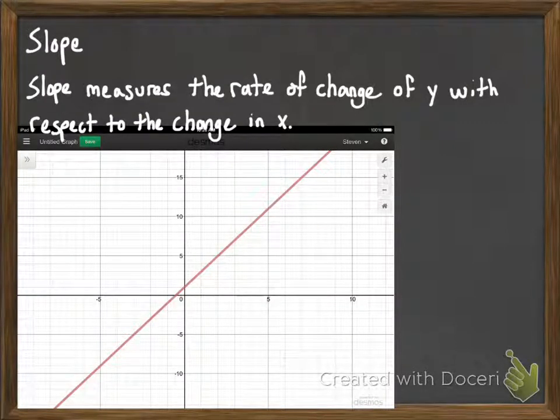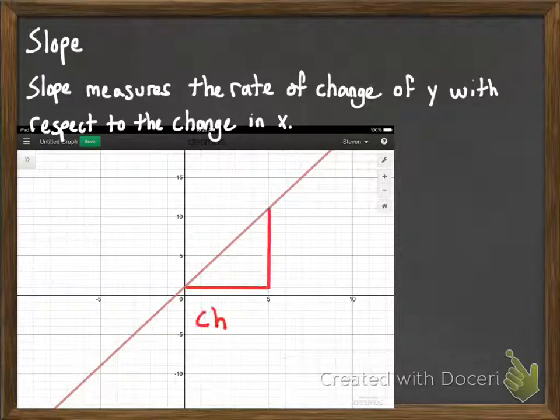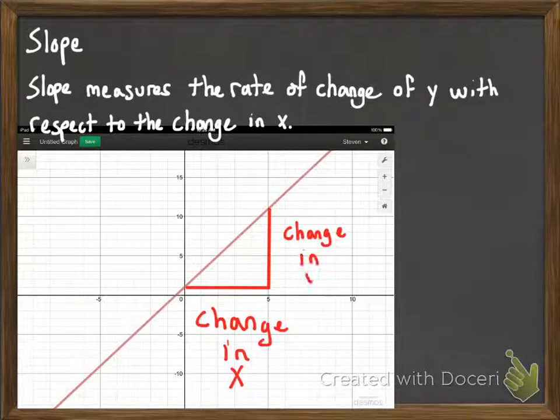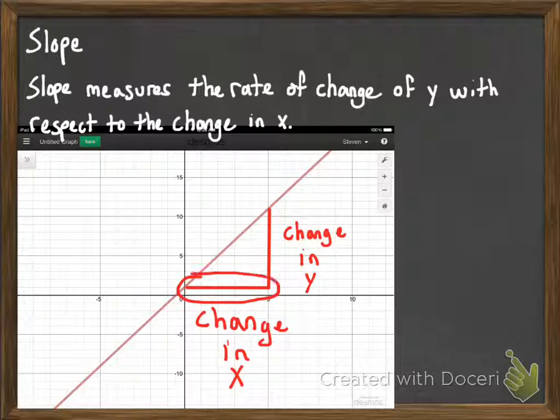Now, if we have for ourselves a straight line here, we can mark on that straight line its horizontal change and its vertical change, as I've done here. The change in x is this horizontal change right here, this measurement, which in this picture would be 5.